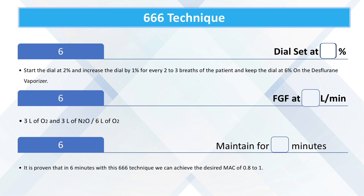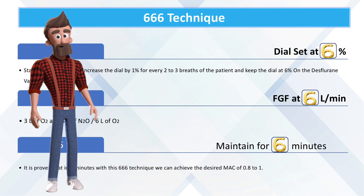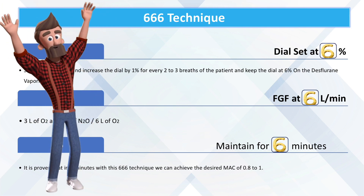More about the triple-six technique: the dial setting at 6%, fresh gas flow at 6 liters per minute, maintained for 6 minutes. It is proven that in six minutes with this triple-six technique we can achieve the desired MAC of 0.8 to 1.